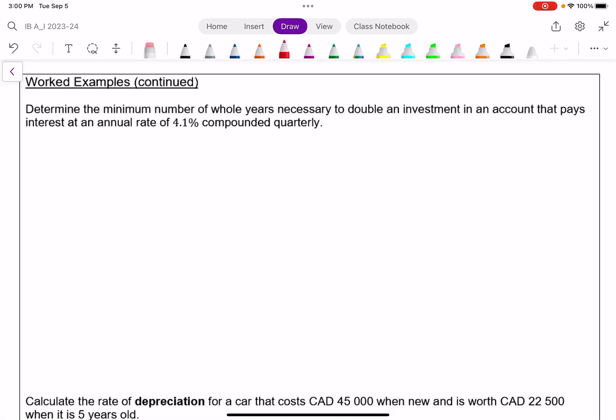Determine the minimum number of whole years necessary to double an investment in an account that pays an interest at an annual rate of 4.1% compounded quarterly. So if we were to try to solve this algebraically, we could first set it up like we had before.